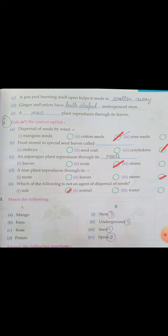Next, C. A peapod bursting itself open helps its seeds to dash. A peapod jab burst hota hai means bikhar jata hai, phod ke bikhar jata hai, to woh help karta hai seeds ko. Kis mein? Scatter away means bikharne mein. Jab koi pod hota hai, seed hota hai, woh phod ke zameen pe girta hai, to woh bikhar jata hai poora. Uske jo seeds hote hain, woh bikhar jata hai.